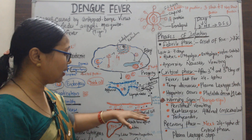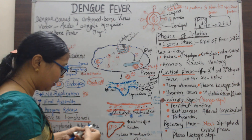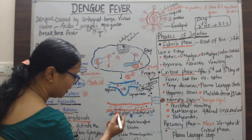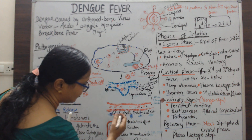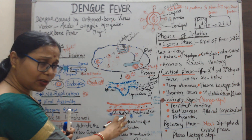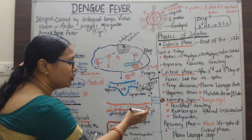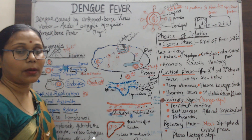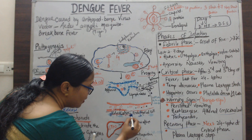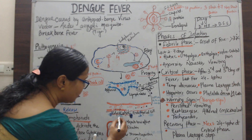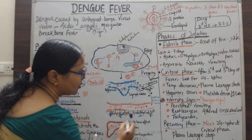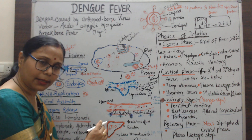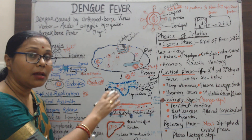In our blood vessels, the inner layer is the endothelial cell. Just inside the endothelial layer there is a sugar-like structure called the glycocalyx. Due to excess cytokines, this glycocalyx layer is degraded, causing leakage. Plasma and fluid leak from inside the blood vessels to the outside. As a result, plasma levels decrease while the hematocrit level increases. This is called plasma leakage.